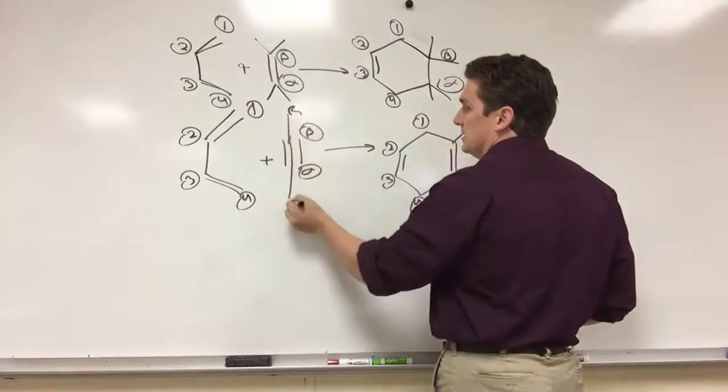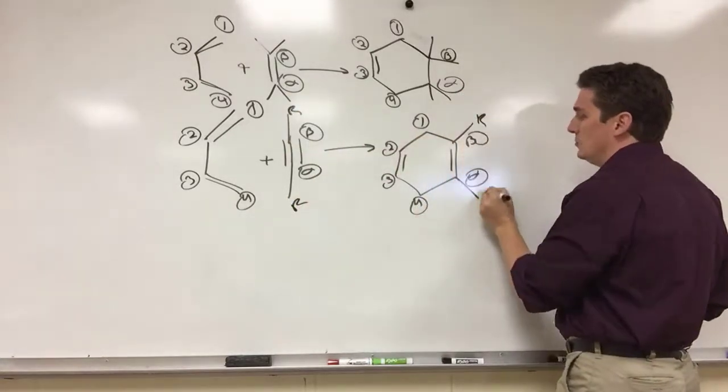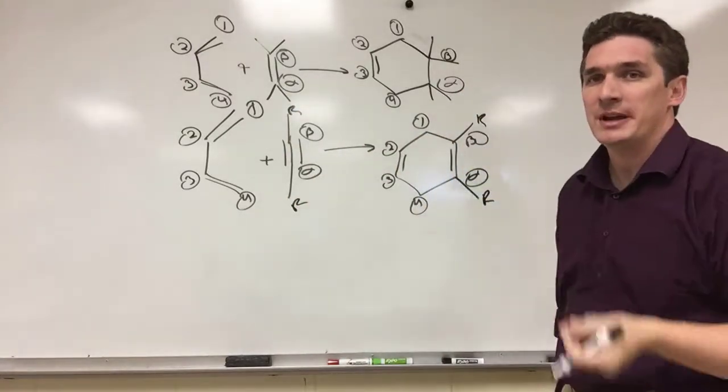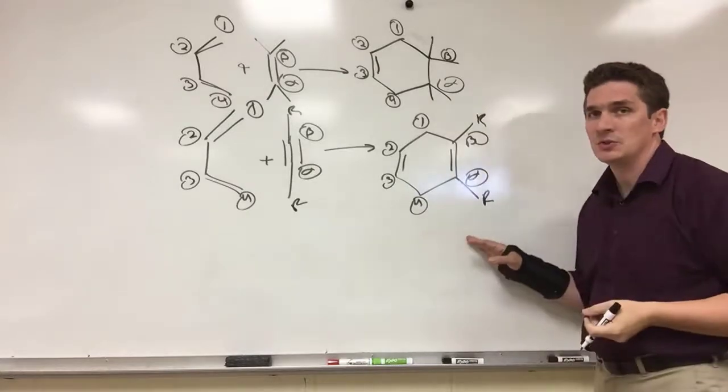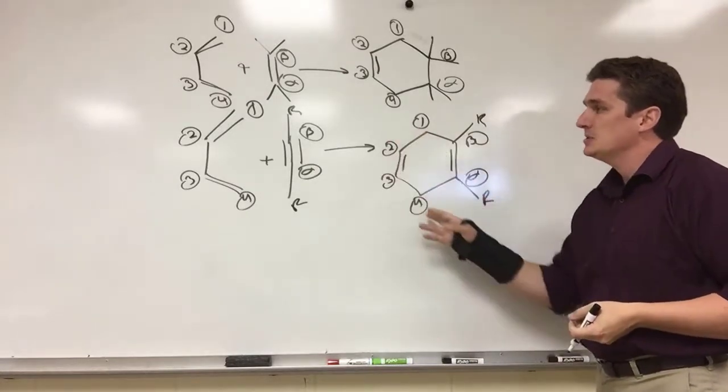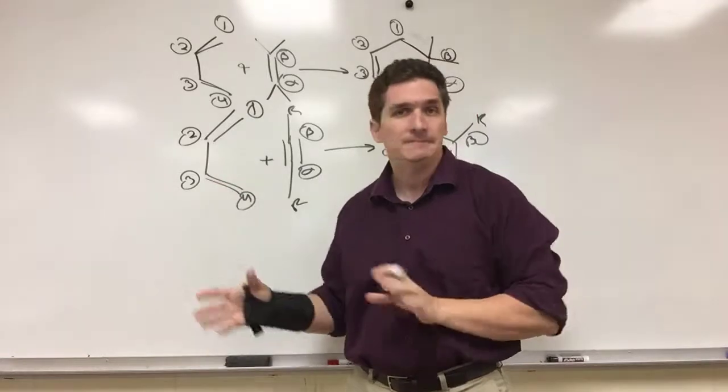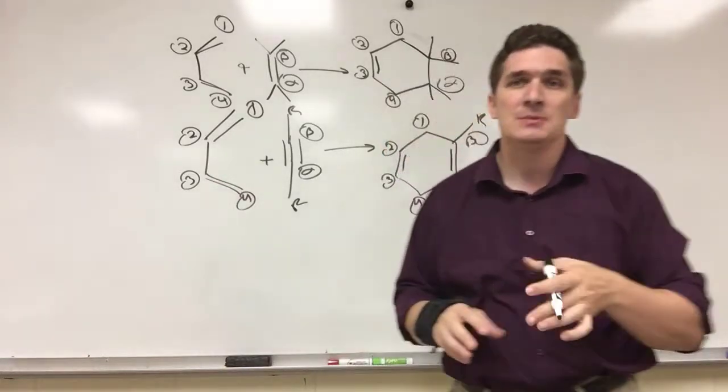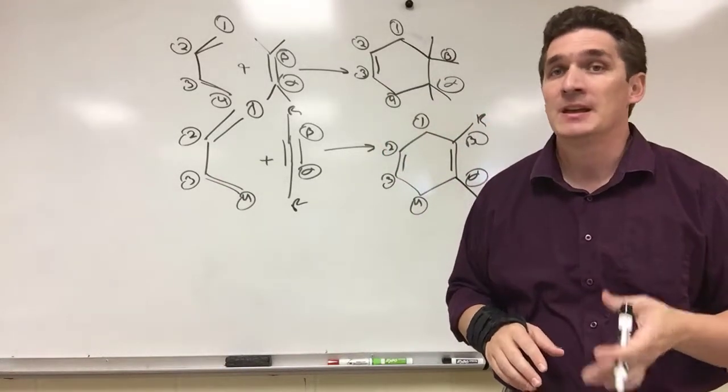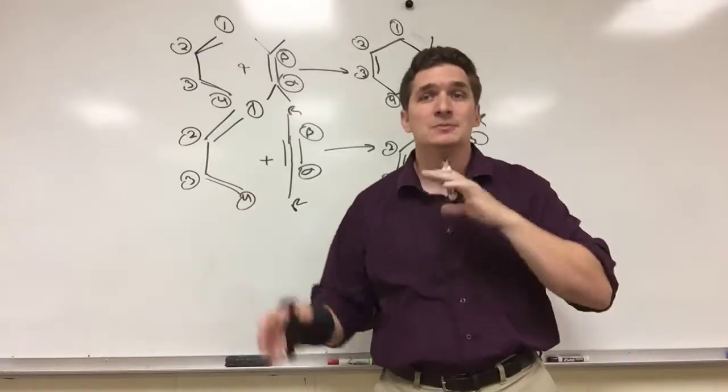Any groups that are associated with this alkyne will end up cis to each other when this reaction is finished. So this is the way we're going to draw the stereochemistry. And anything associated with the one, two, three carbons on the parent diene, that's why you're numbering it, should help you keep track of where all the groups end up going. And this is how you do Diels-Alder with an alkyne.